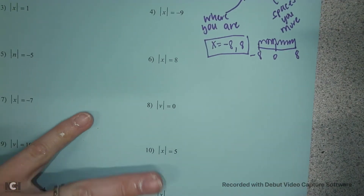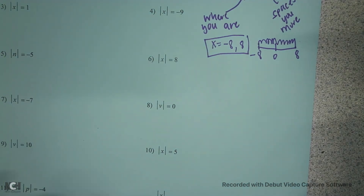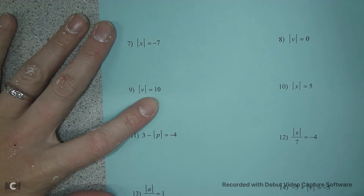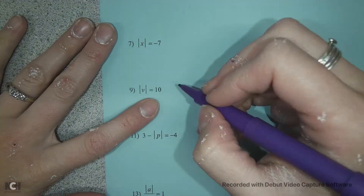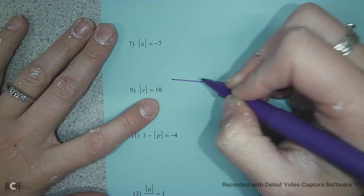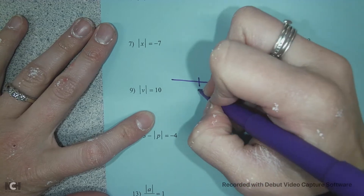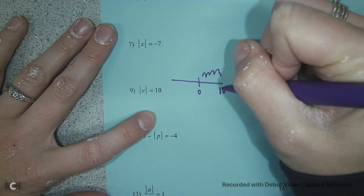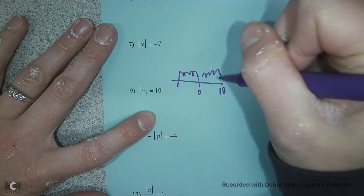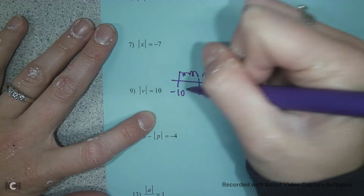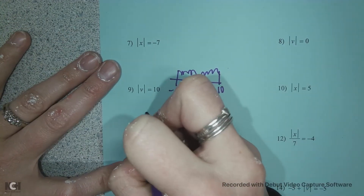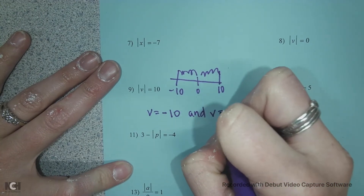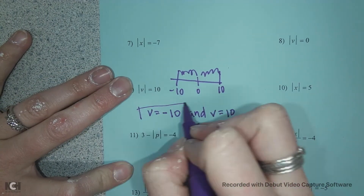The first few problems, the absolute value is already by itself. So, like if you looked at number 9, I need to move 10 spaces. Since my absolute value is all by itself, I can look at my number line: if I move 10 spaces this way, I'll be at positive 10, or if I move 10 spaces this way, I'll be at negative 10. So B would equal negative 10 and V would equal positive 10 — those are my two answers.